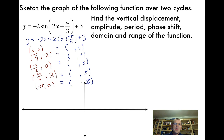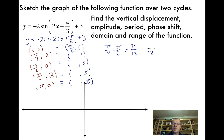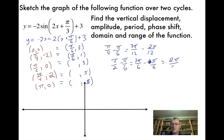Now we apply the horizontal shift. Inside the brackets we have x + π/6, which means we're moving to the left π/6 — so we subtract π/6 from each x-value. The first point: 0 − π/6 = −π/6. The next: π/4 − π/6 = 3π/6 − 2π/6 = π/6. Then: π/2 − π/6 = 3π/6 − 2π/6 = 2π/6 = π/3.